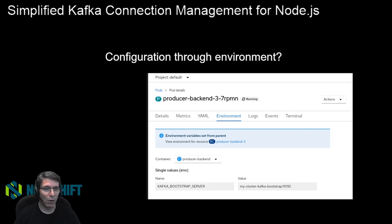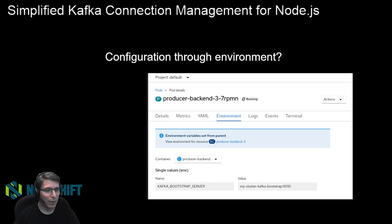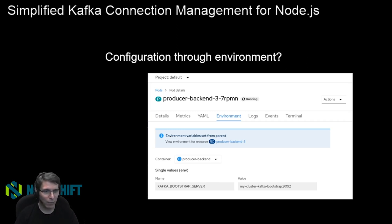In that example code, we were configuring through the environment by setting environment variables. That's not necessarily the most secure thing, because if you go into an OpenShift console, you can fairly easily inspect the environment variables — and often more people than you'd think have access to a particular environment, or you might be generating core dumps that you want to share to investigate a problem.